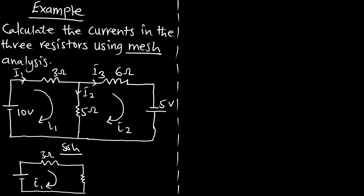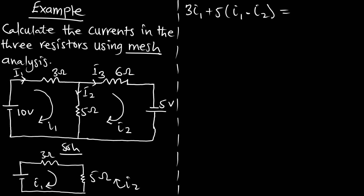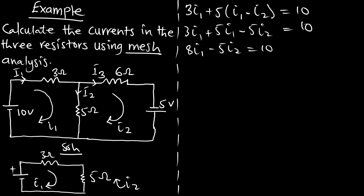For mesh 1, the diagram has a 3 ohm resistor, a 5 ohm resistor, and a 10V source. Applying KVL: 3i1 + 5(i1 − i2) = 10. The mesh current exits from the positive side of the 10V source. Expanding: 3i1 + 5i1 − 5i2 = 10, giving 8i1 − 5i2 = 10 as equation 1.